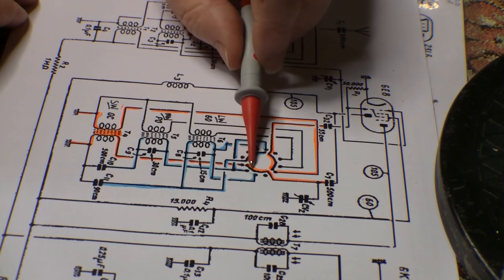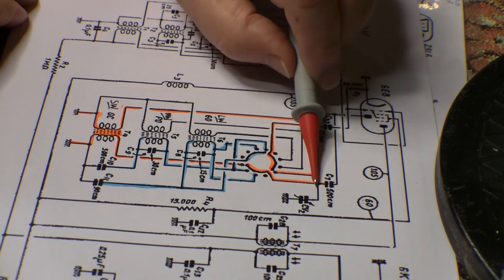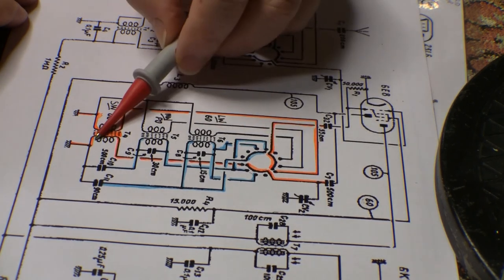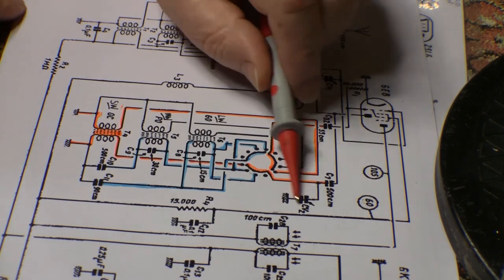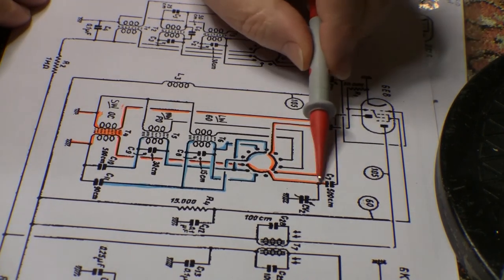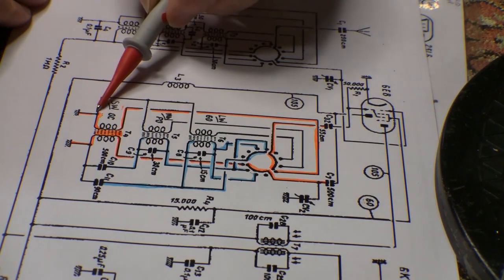The other end here goes up and out and has the variable condenser in parallel here, so I'm assuming that coil in parallel with this is essentially the tank circuit, and then it heads off to the valve.